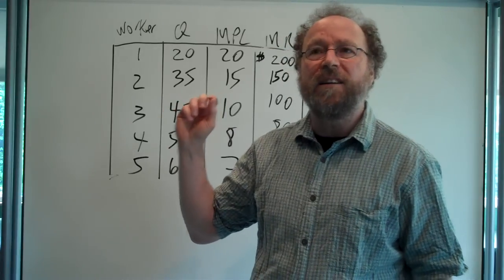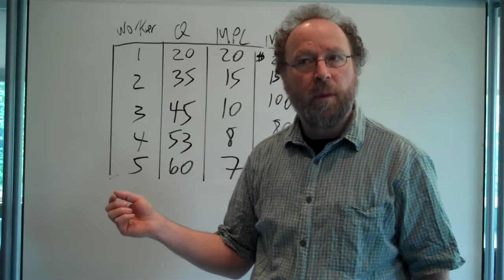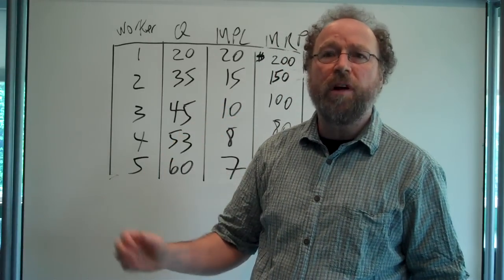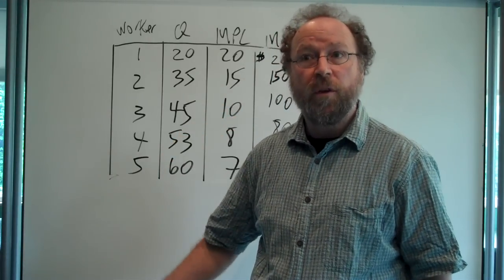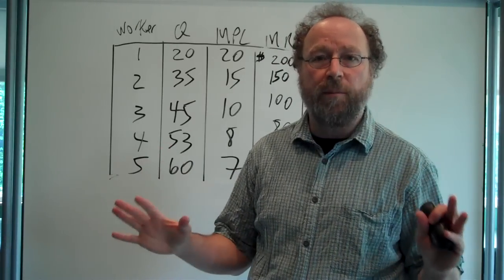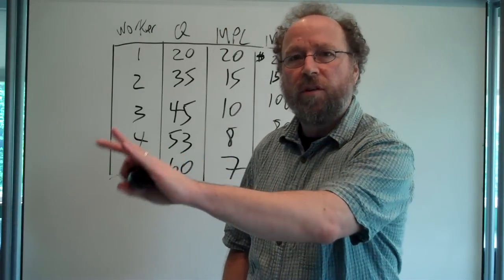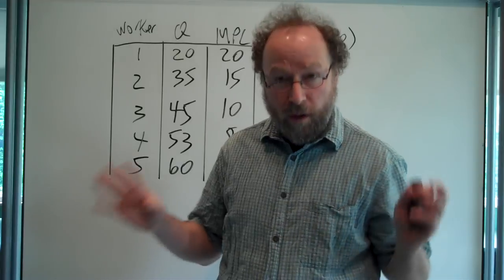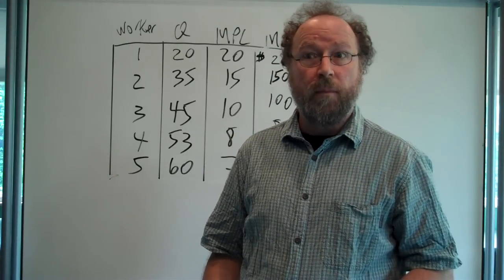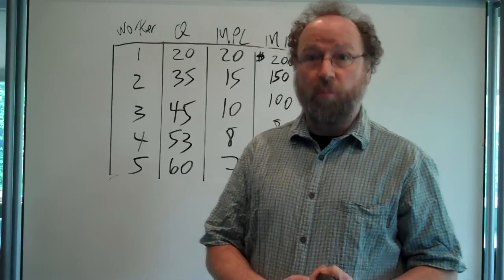The MPL is the amount that an additional worker adds to your total output. Presumably, the marginal product of labor falls when you add additional workers. This is the basic premise of the whole theory. You have a certain amount of land, machinery, and equipment. You want to increase output. The way you do it is by adding workers. In the short run, you can't add land or machinery. What you add is workers.